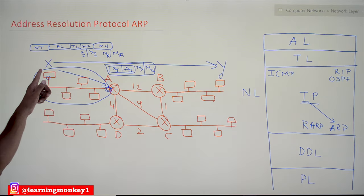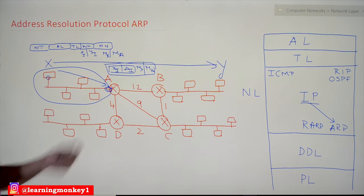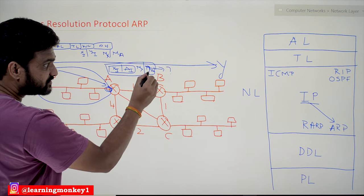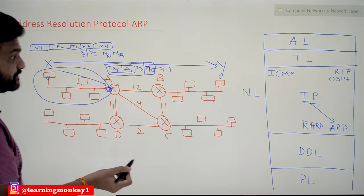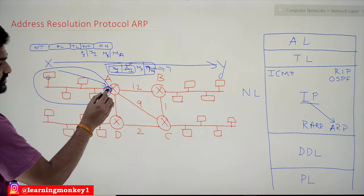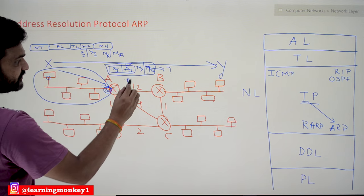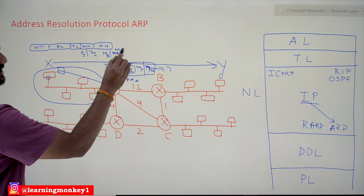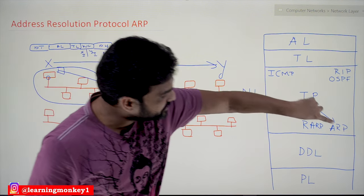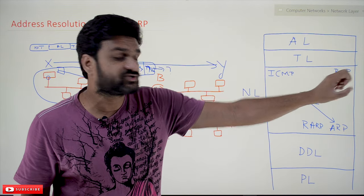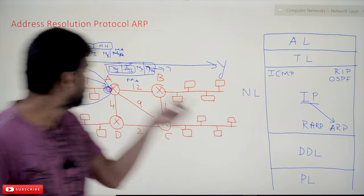This ARP request packet is transferred from X to A. The packet contains the IP address of A, the IP address of X, and the MAC address of X — and it is requesting the MAC address of A. As the ARP request packet is received at A, in response it is going to send back the MAC address of A. Now this MAC address of A gets stored in the data link layer header.